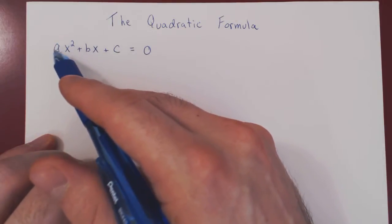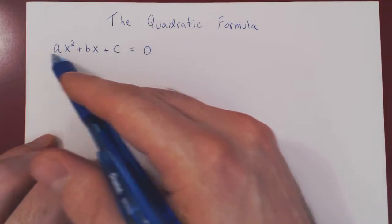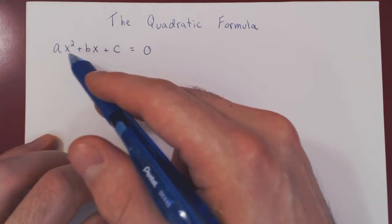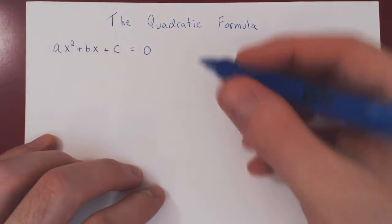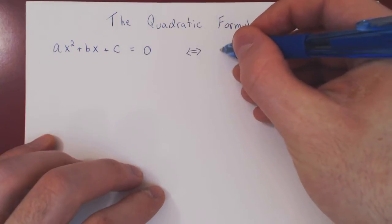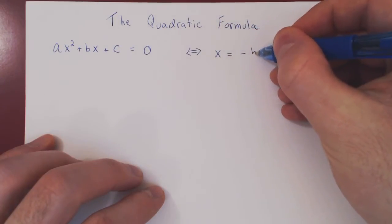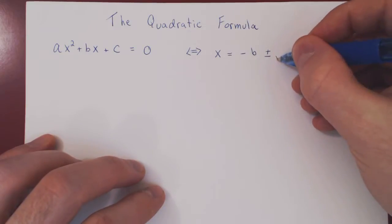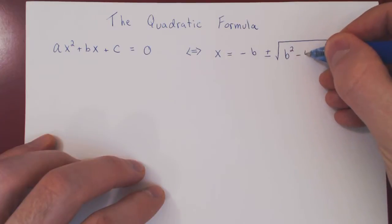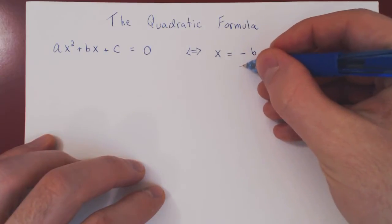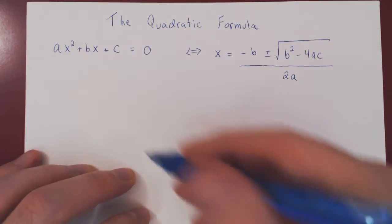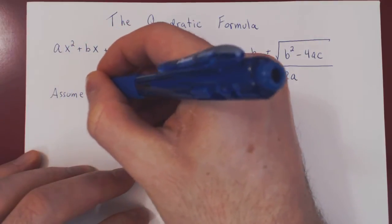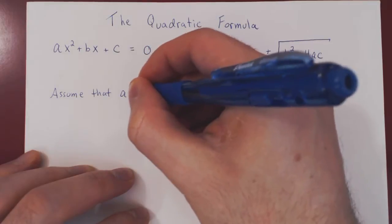We can make one more assumption. If a is negative in our derivation, we can multiply across by negative 1, then our multiple of x squared would be positive, and then we're good to go. So the statement is: the equation can only be 0 if and only if x equals negative b plus or minus the root of b squared minus 4ac, all over 2a. We will prove this by completing the square, assuming a is strictly greater than 0.